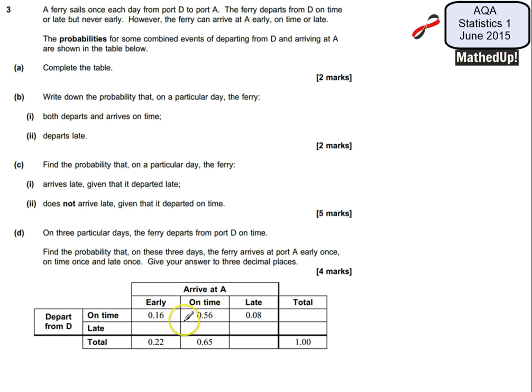In order to complete the table we're just working out the missing values. Over here the total is going to be the sum of these three values which is going to be 0.8. Which means here we're going to have 0.2.